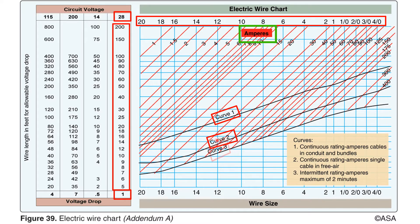Curve 3 represents intermittent circuits running for a maximum of 2 minutes. Examples of these types of circuits are flat motor circuits, starter and landing gear circuits. Because these circuits do not accumulate heat over longer periods of time, they may utilize a smaller gauge wire for a given current flow.